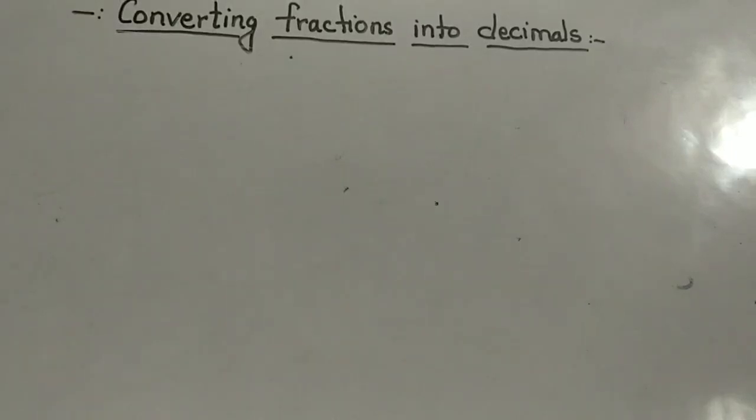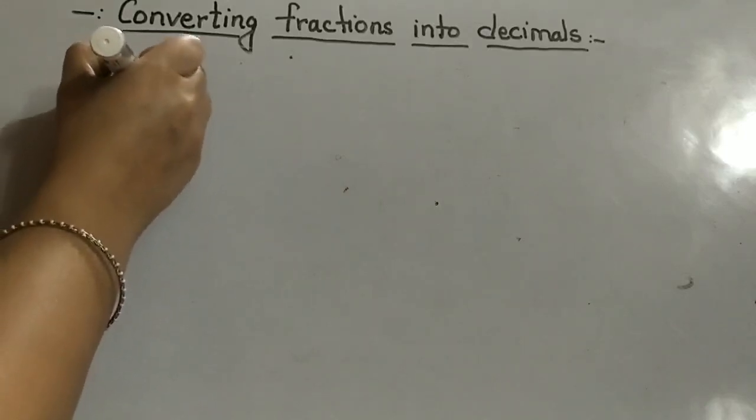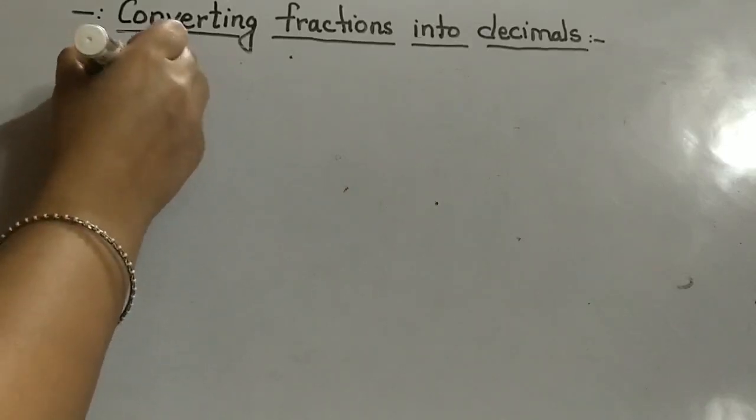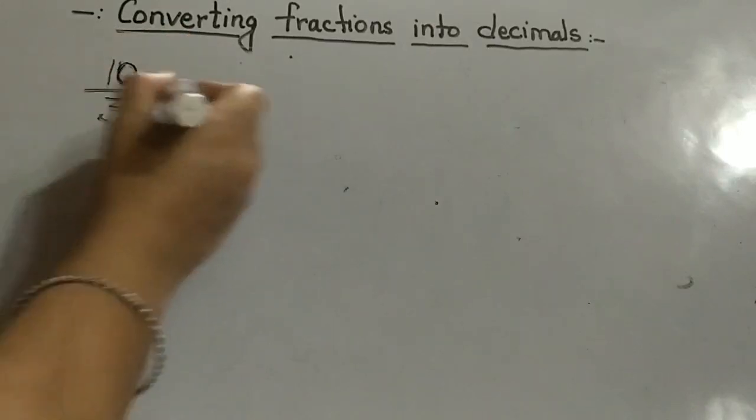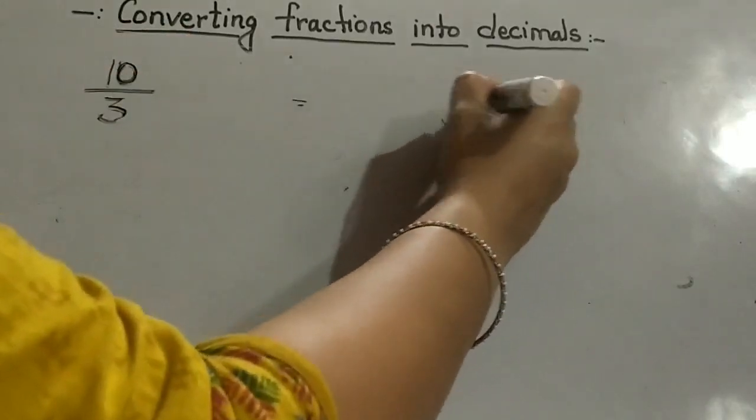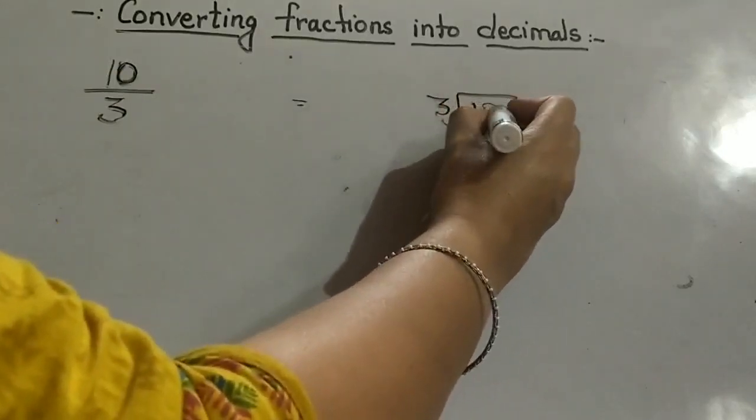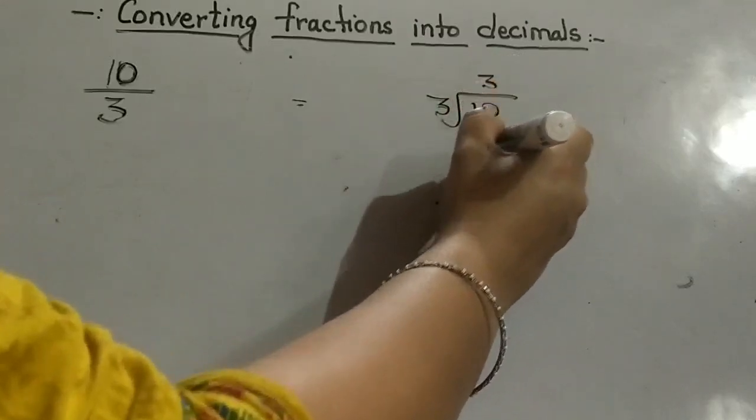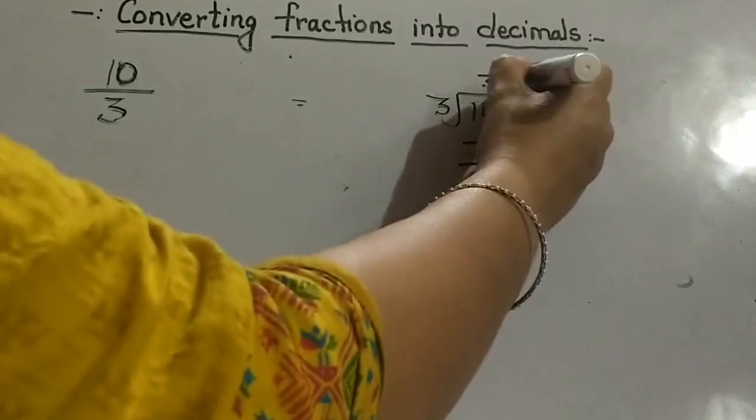So this is another way to convert the fraction into decimal. One more example here. Suppose the question is 10 upon 3. So we don't have the combination of 3, so what will we do? We will divide the numerator by the denominator. 3 into 3 is, 3 times 3 are 9, 1. Because of point, 0, 3 times 3 are 9.